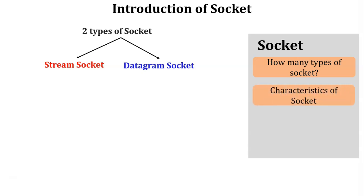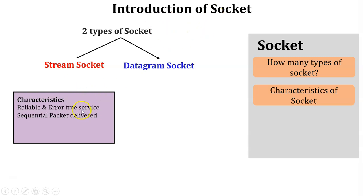Next, the characteristics of a socket. The characteristics of stream socket are reliable and error-free services. During the transmission from sender to receiver, if any packet is lost or damaged it is again sent by the sender. Another characteristic is sequential packet delivery — the sender assigns sequence numbers to all the packets and sends them one by one in a sequential manner, providing reliable and error-free services.